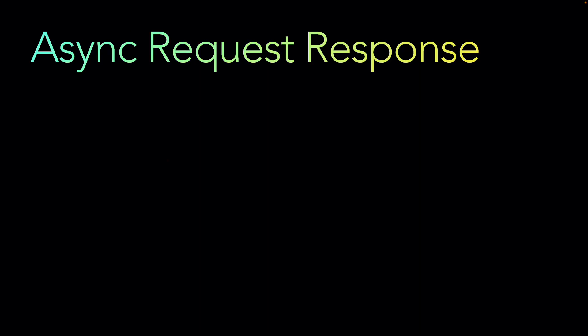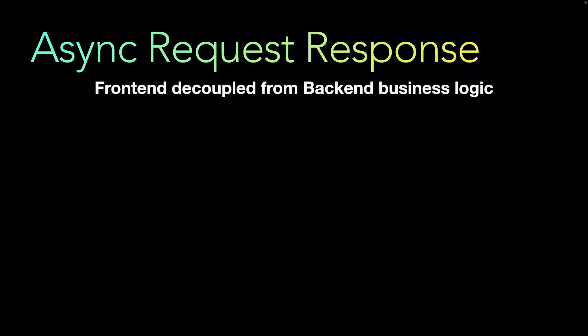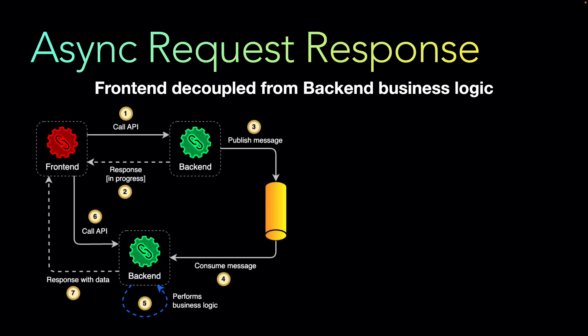Let's start with the async request-response pattern. In this pattern, the front end is decoupled from the back-end business logic. The front end calls the API, but the backend service responds with an 'in progress' status — for example, HTTP 202 Accepted — meaning it has accepted the task but hasn't completed it yet. Once the job is done, you can call another API to get the data.